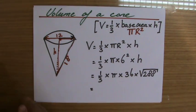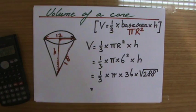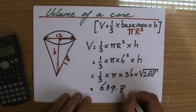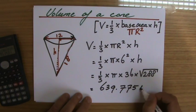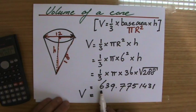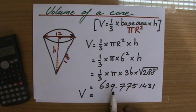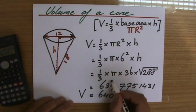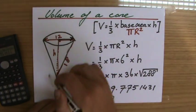It says 639.7751431. We've got to correct that to three significant figures: one, two, three. The nine goes up to 10, so 640. We should carry that one to the next place value. Volume - oh I didn't give units - so we can just say units to the power three, units cubed.